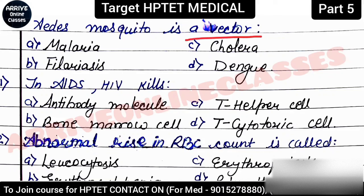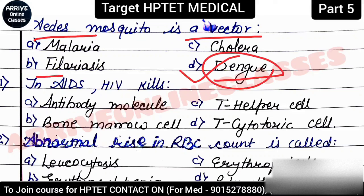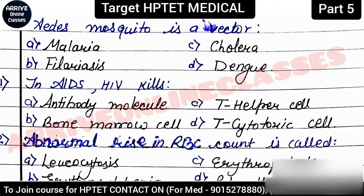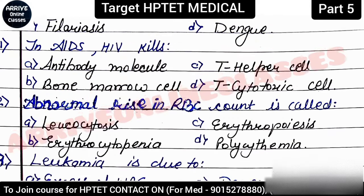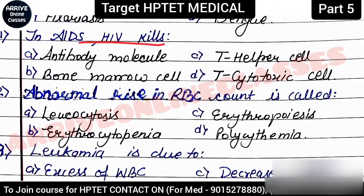Next question: 'Aedes mosquito is a vector of?' There are three mosquitoes that vector common diseases. For malaria, the vector/carrier is the female Anopheles mosquito. Aedes mosquito is the vector for dengue. A third disease, filariasis (also called elephantiasis), is vectored by the Culex mosquito. Elephantiasis causes the human leg to swell to an elephant-like size — it is a worm infection.